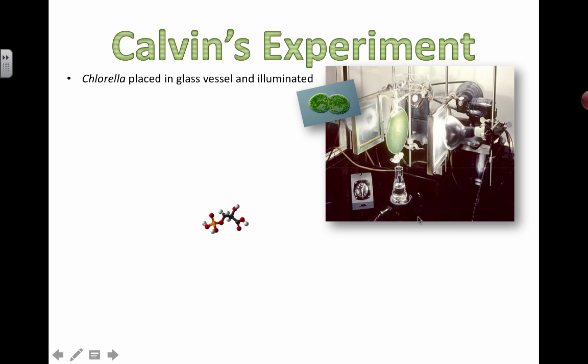What he did was he placed some photosynthesizing organisms, Chlorella, into some kind of glass vessel. Here's the famous picture of his experiment. He shined a big light at it to give light for photosynthesis. He said, hey little Chlorella guys, just do your thing and do photosynthesis. He gave them plenty of CO2 as a raw material for doing photosynthesis and he gave them a lot of hydrogen carbonate ions to help them with their process as well.